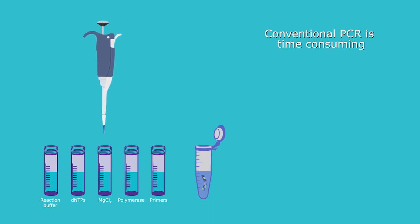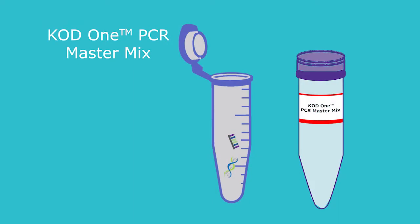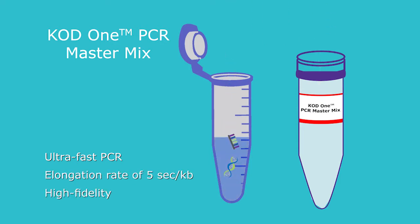Conventional PCR reactions are time-consuming, especially when working with numerous samples. KOD1 PCR MasterMix is a perfect choice as it offers ultra-fast PCR with one of the fastest elongation rates available for high-fidelity polymerases.